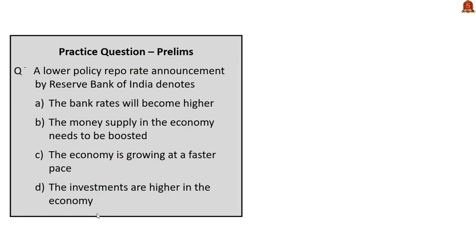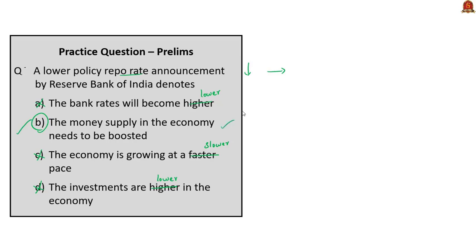A lower policy repo rate announcement by the Reserve Bank of India denotes which of the following? When the policy repo rate is reduced, bank rates will also become lower. This is done because the economy is growing at a very slow pace and investments and money supply are on the lower side. The correct answer is option D: the money supply in the economy needs to be boosted. When the bank reduces rates, the money supply in the economy can be boosted.